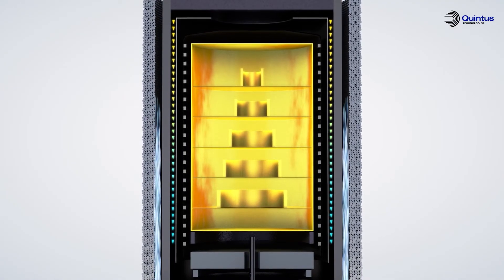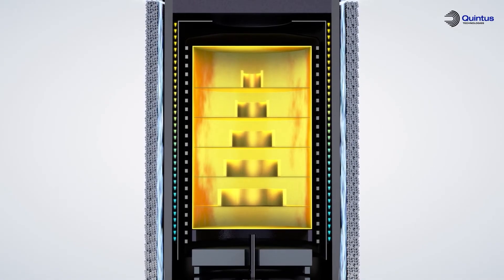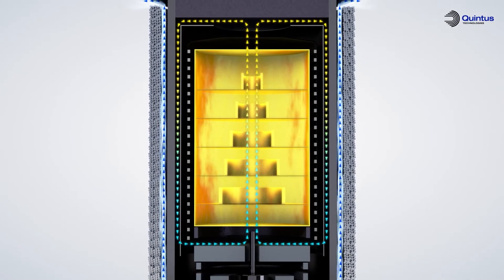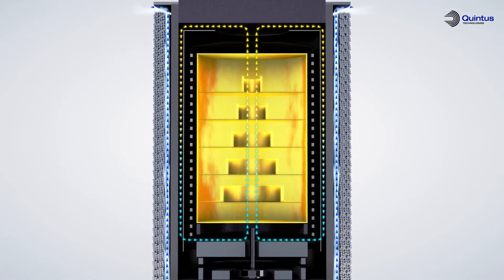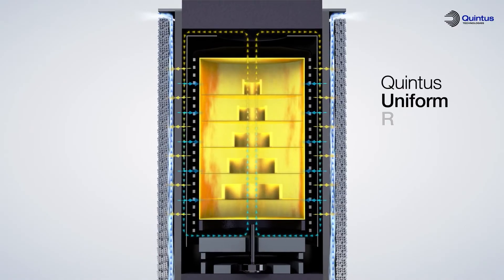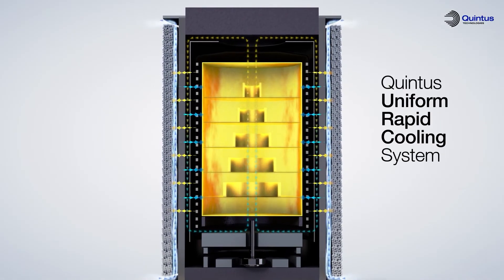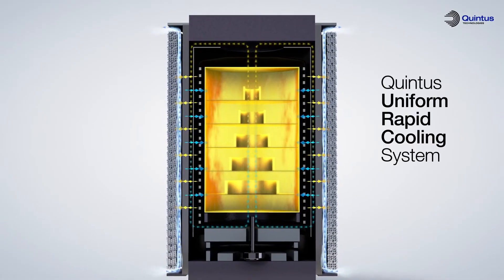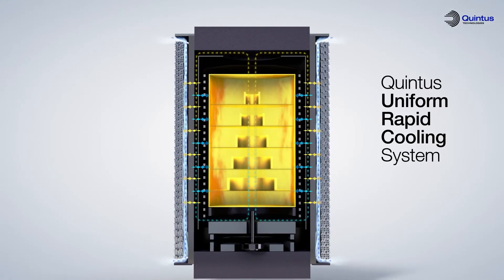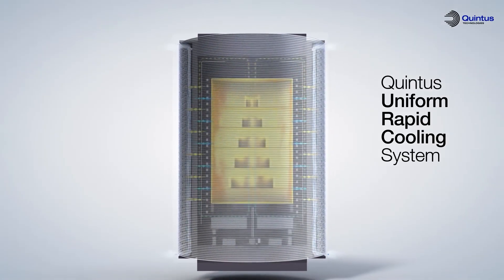Through the Quintus Uniform Rapid Cooling System, URC, the hot gas is pushed towards the thin-walled vessel. At the same time, the vessel wall is cooled by water from the outside while it is supported by the wire package to keep it safe and under control throughout the process.